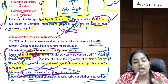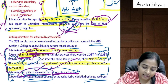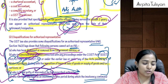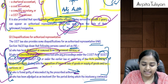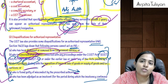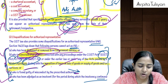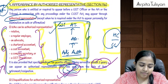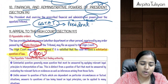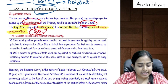However, persons dismissed or removed from government service, convicted of any offense under CGST, SGST, UTGST, IGST, or old VAT/service tax laws, or found guilty of misconduct cannot act as authorized representative. Similarly, a person adjudged as insolvent cannot act as AR during the insolvency period; once insolvency is resolved, they become eligible again.